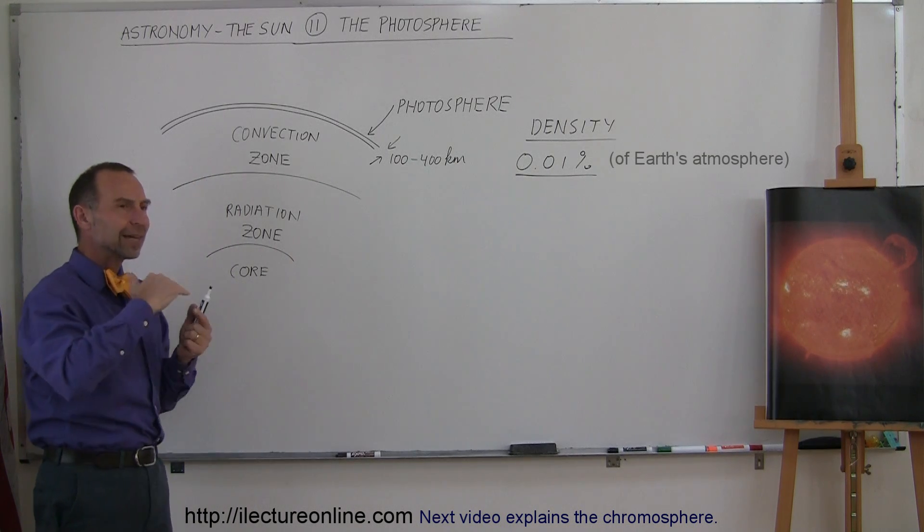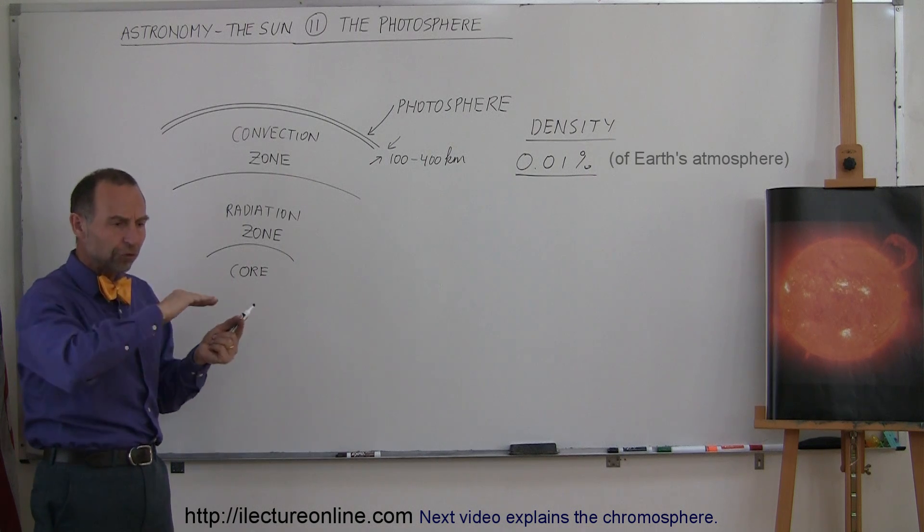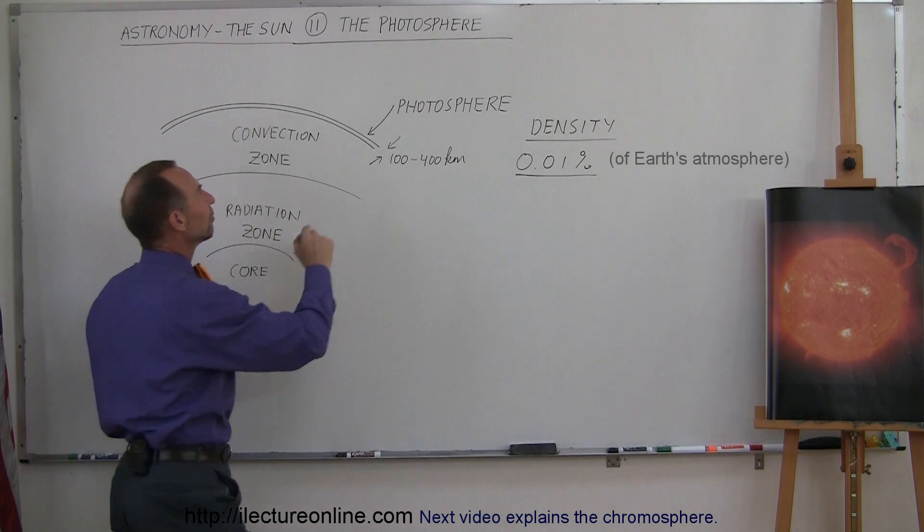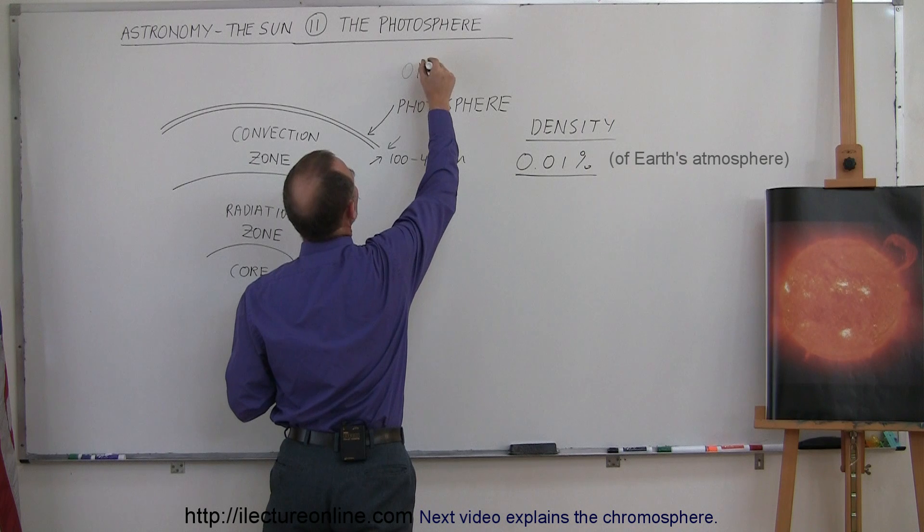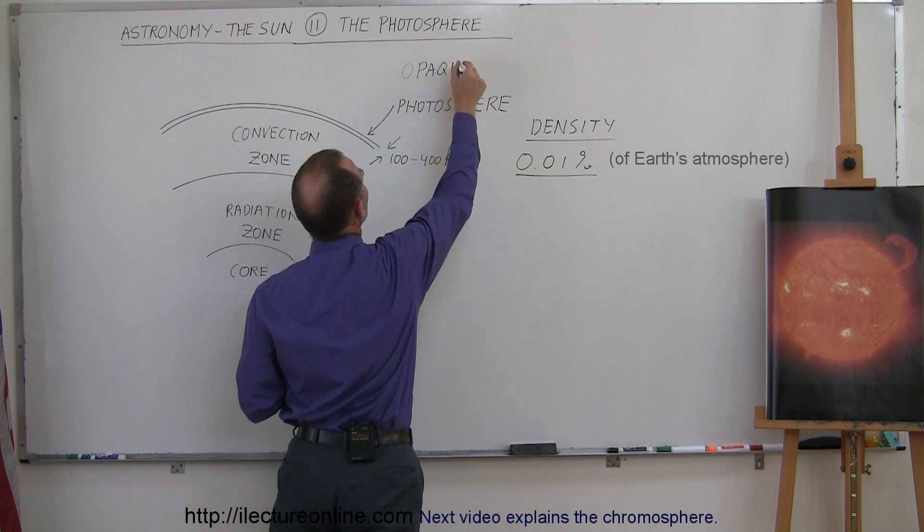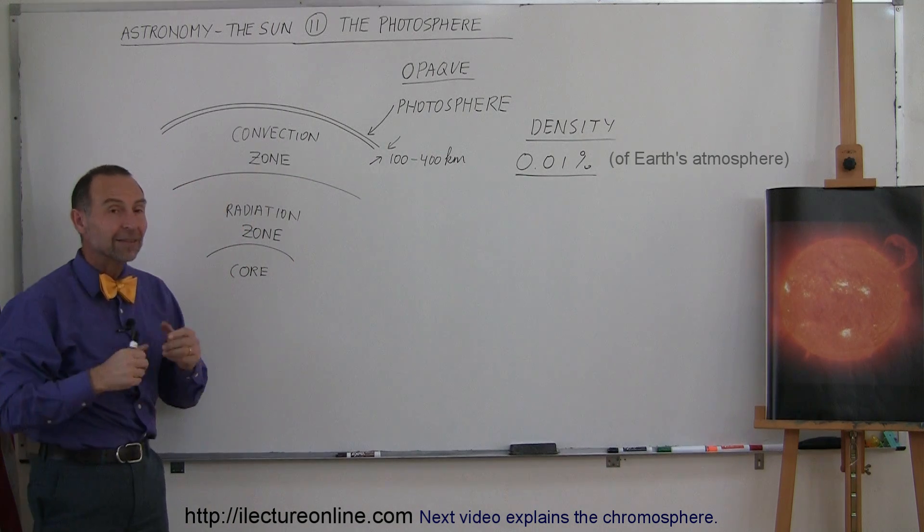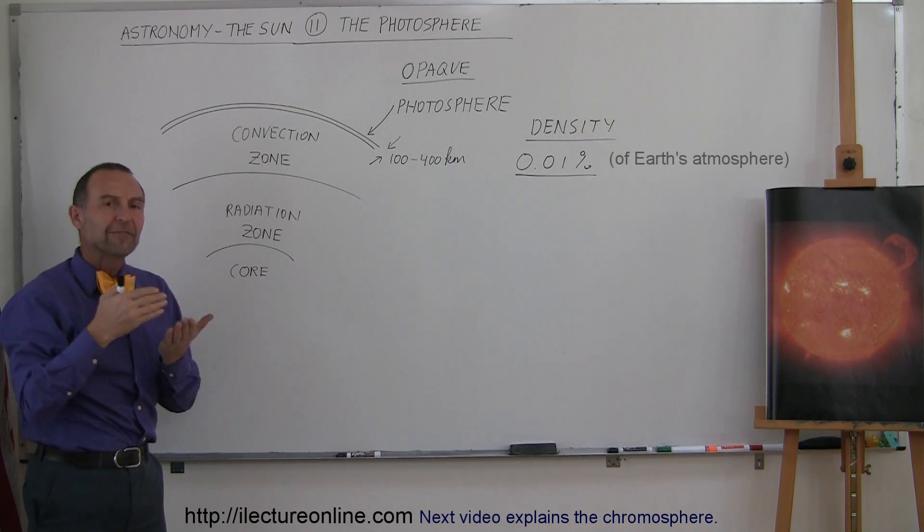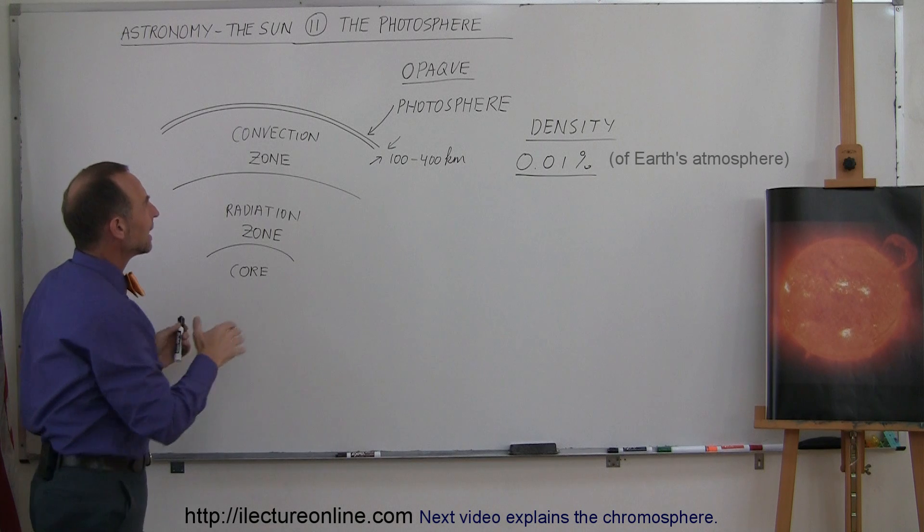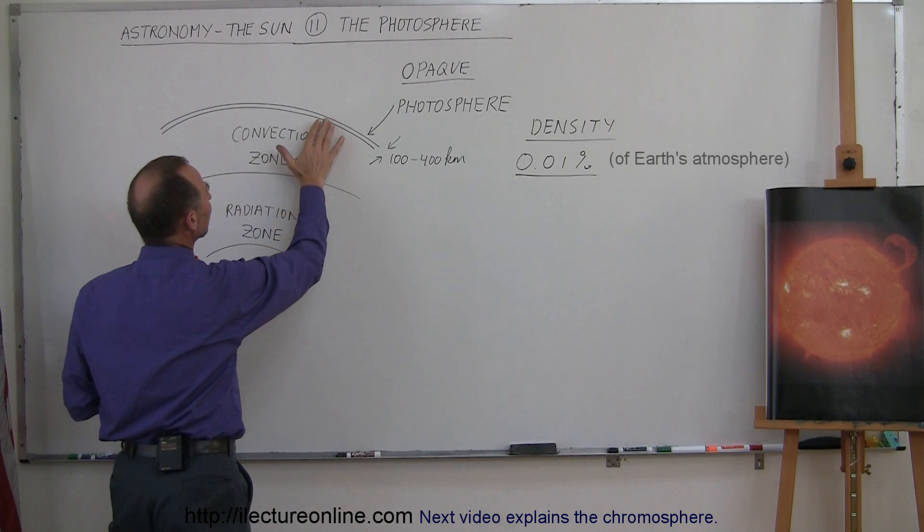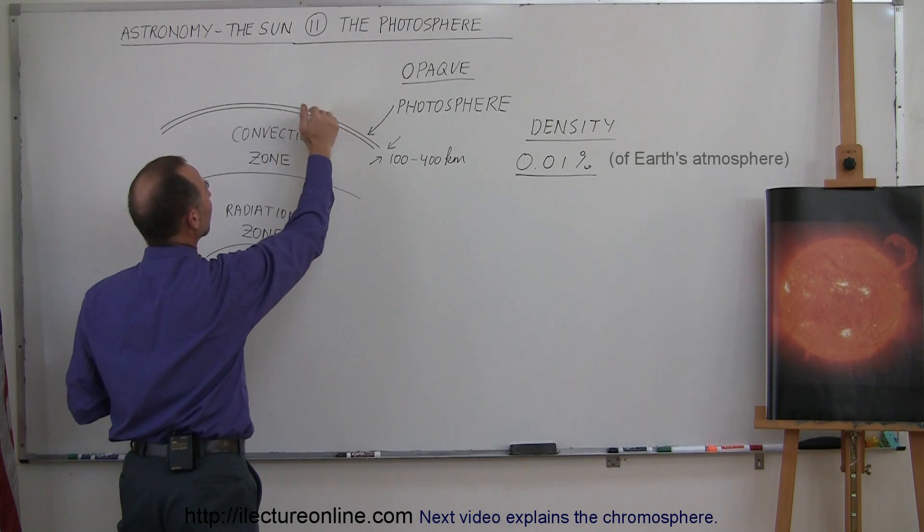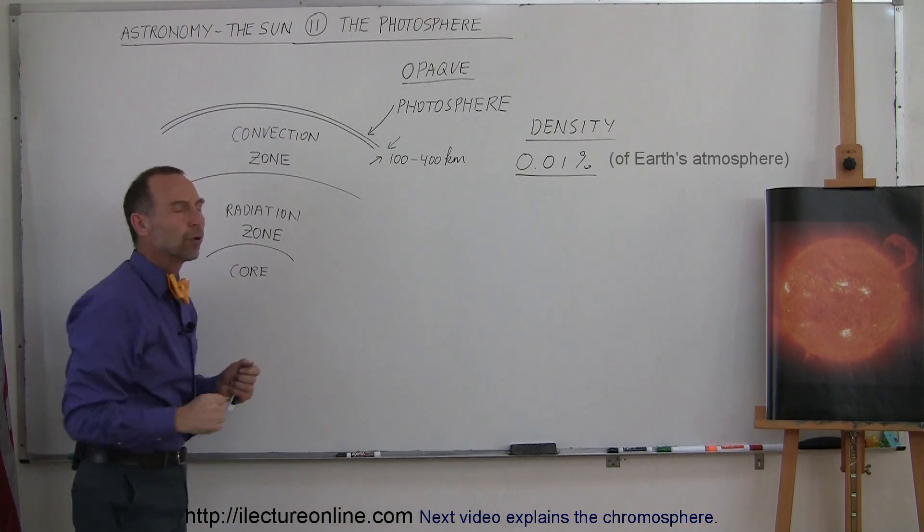Nevertheless, it is kind of a physical surface because the photosphere is very opaque. My pen is starting to give out on me. Opaque. So what does opaque mean? Opaque means that it's not penetrable by visible light. So any light coming from the interior of the Sun that tries to make it out of the Sun kind of gets blocked by the photosphere.